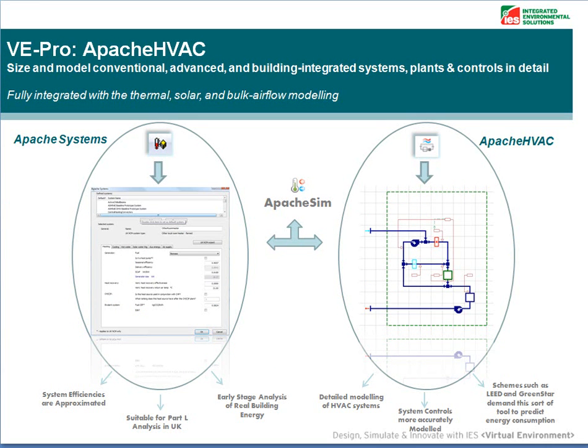There are two ways to represent your systems in the Virtual Environment Pro software. One is located in the Apache View interface and is called Apache Systems. The other is the Apache HVAC module which is fully integrated into the Apache Sim module.